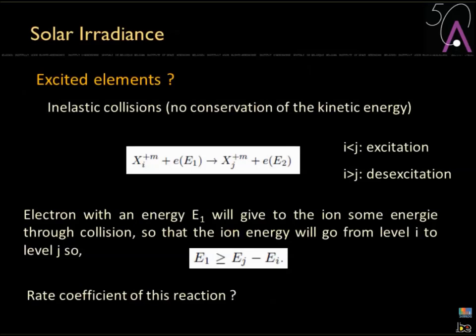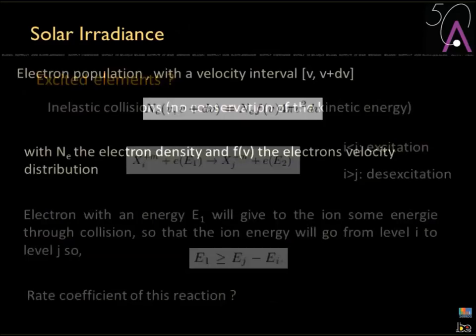If you have collisions with electrons in the corona, you will have inelastic collisions, meaning there is a loss or gain of kinetic energy. If an electron with energy E1 gives some energy to the ion, you go from the ground state to the excited state E — that is excitation. You also have the counterpart: de-excitation. What is important is to estimate the rate coefficient of this reaction.